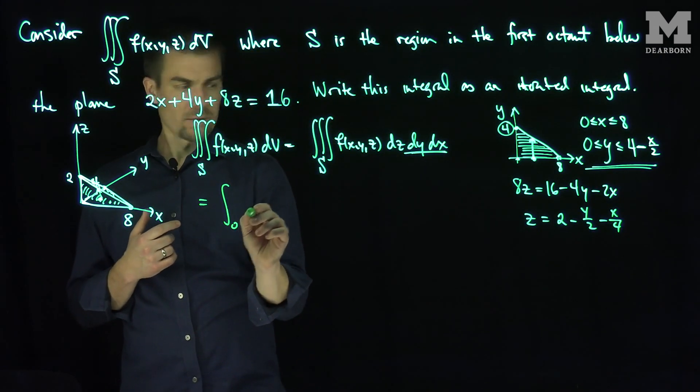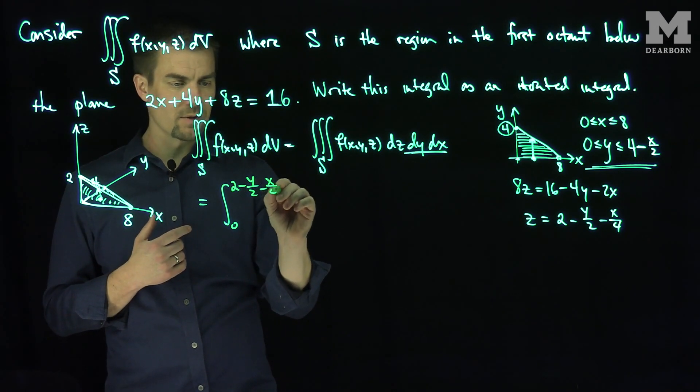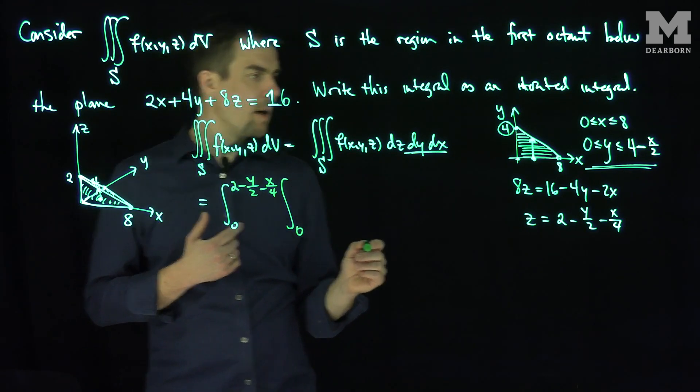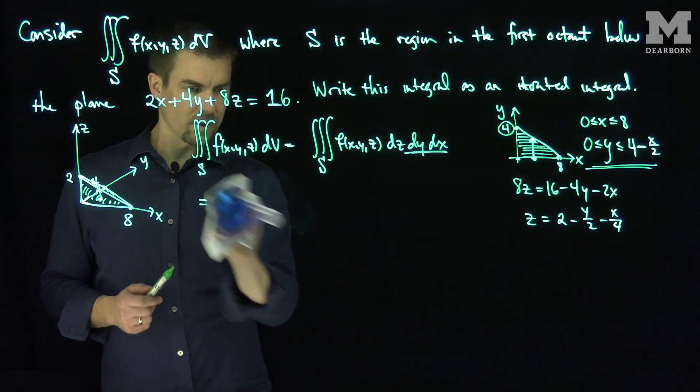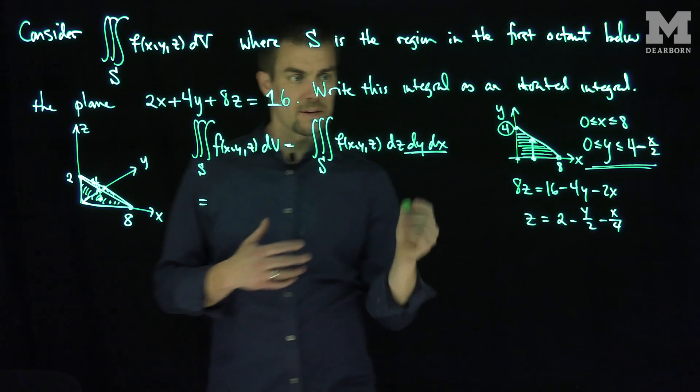I can write this as the integral. z goes from 0 to 2 minus y over 2 minus x over 4. The integral, y goes from 0 up to what? Oops, I had this in the wrong direction. So let's do the x-integral. We have to do the constants first. So let's do that constant first. We did the order wrong. So let's think about this.